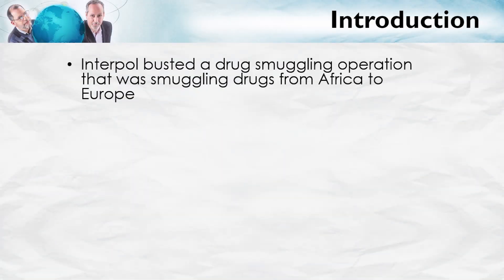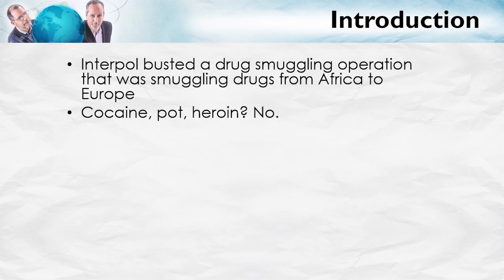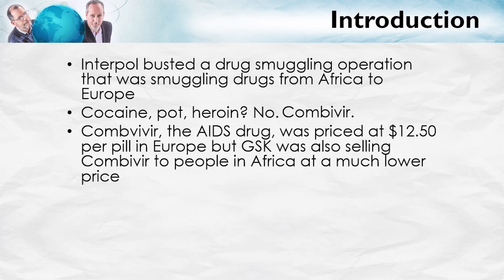Interpol, the international police organization, busted a drug smuggling operation that was smuggling drugs from Africa to Europe. What was it — cocaine, pot, heroin? No, it was none of these. It was the pharmaceutical drug Combivir. Why? Combivir, the AIDS drug, was priced at about $12.50 per pill in Europe, about the same as in the United States. But GSK was also selling Combivir to people in Africa at a much lower price.